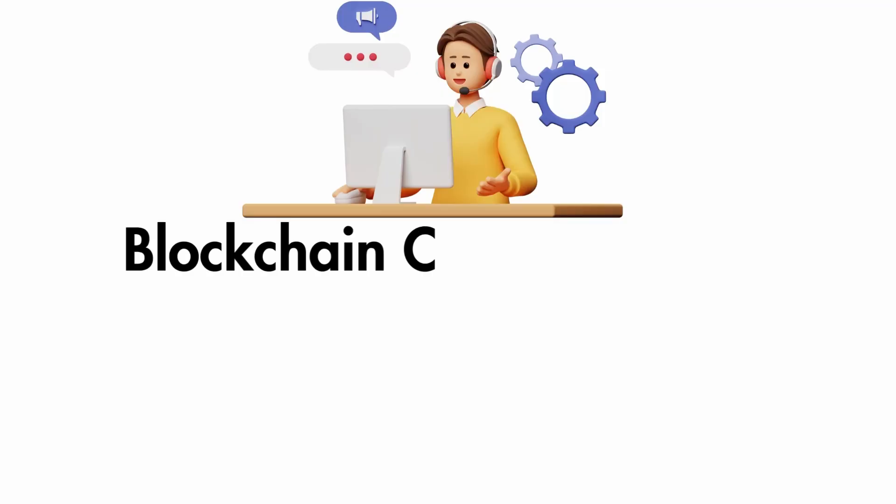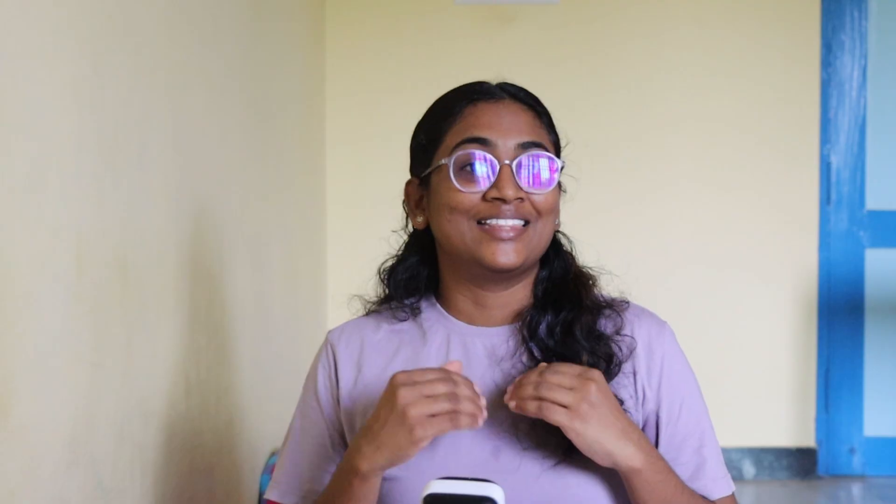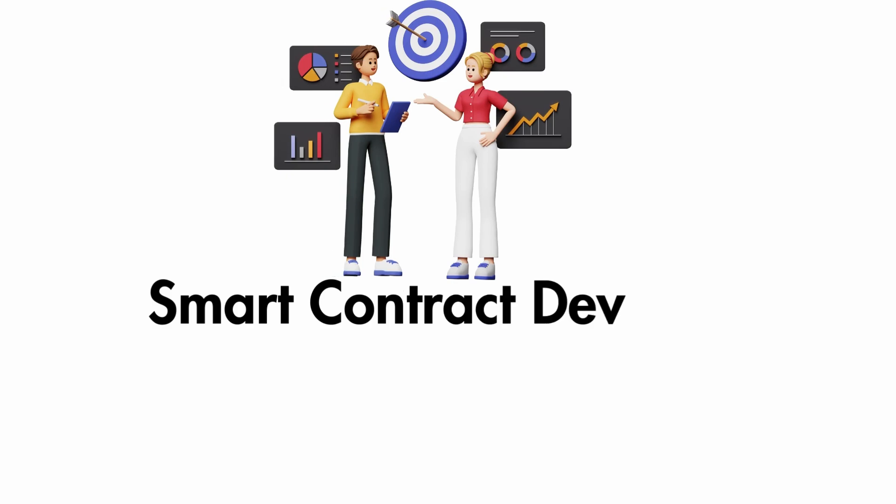Next, you need to learn to program it. When I say a blockchain developer, there are two kinds: one is the core developer and the other is the smart contract developer. Core engineers work on creating a blockchain itself — for example, Satoshi Nakamoto was a core engineer who actually wrote and developed the blockchain itself. The next type is a smart contract developer.